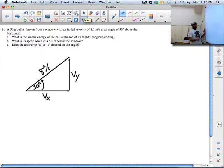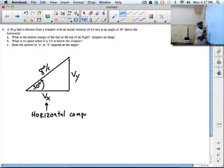This is called horizontal component. In this case, it's eight meters per second, but it's my initial velocity. It's at a funny angle.